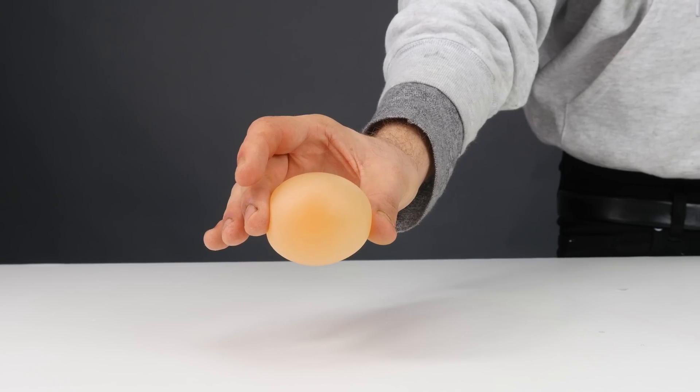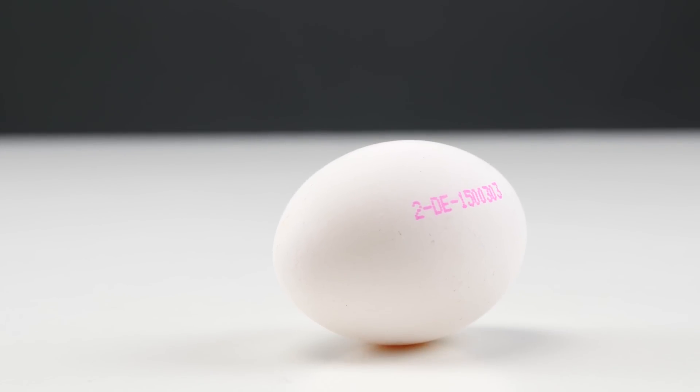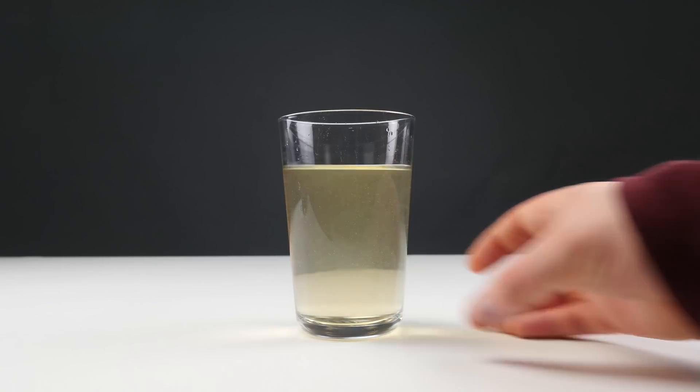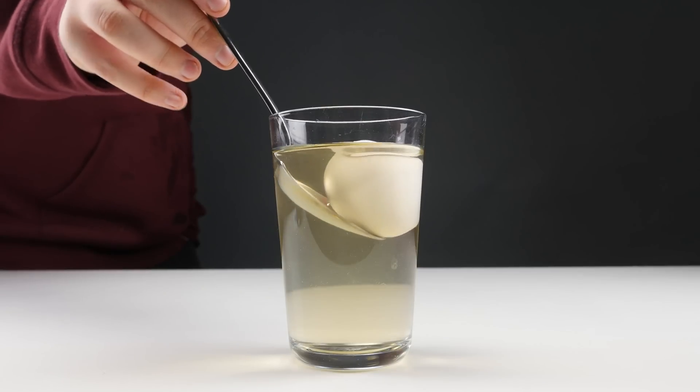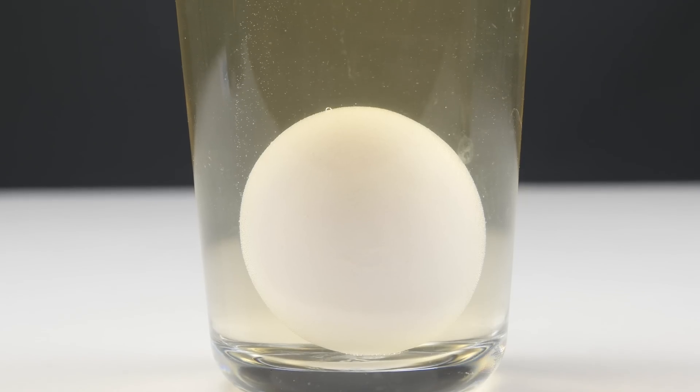Let's continue with number 4. Now, we'll turn a raw egg into a bouncy ball. You'll need an egg, who would have thought, and a glass full of vinegar. Carefully place the egg into the glass and make sure that the egg is completely covered. Once you've done that, it's time to wait.